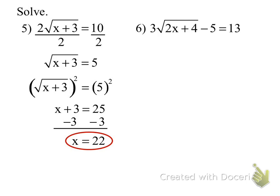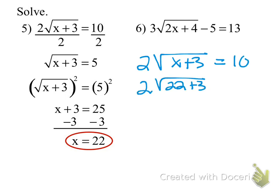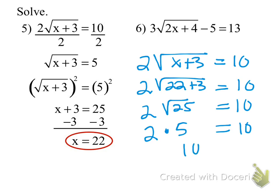Everyone make sure you think about this — when you have a radical you must check that your answer works in the original equation, because we can get extraneous solutions. I substitute x = 22 back in: 2 times radical(22 + 3) = 2 times radical(25) = 2 times 5 = 10. That solution works — it's not extraneous.